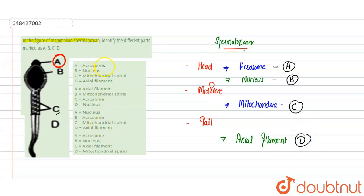So these are the A, B, C, D parts. Here we will see the options. Option A: acrosome, B: nucleus, C: mitochondrial spiral and D: axial filament. Yes, option A is completely correct. The other options are incorrect - option A is correct.